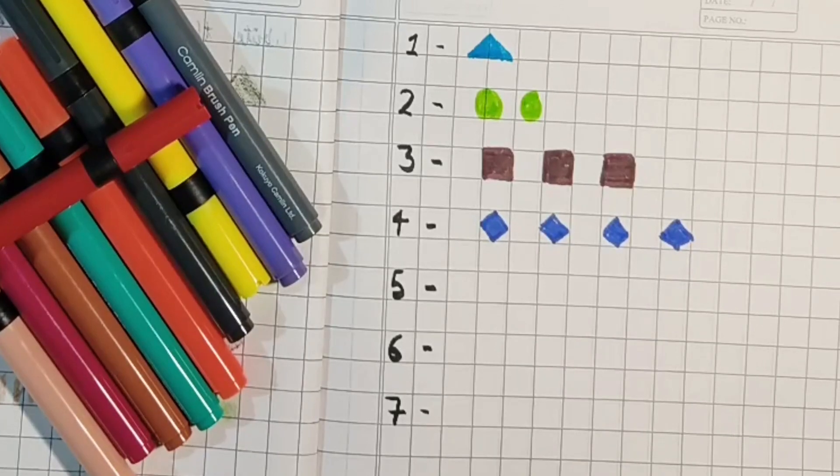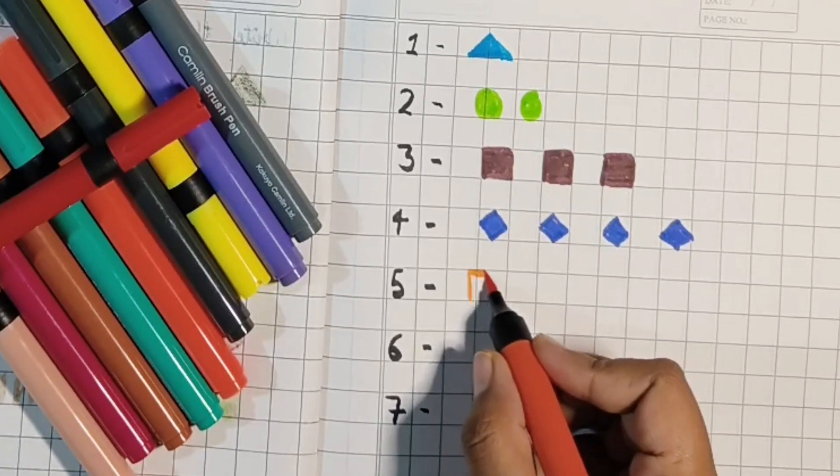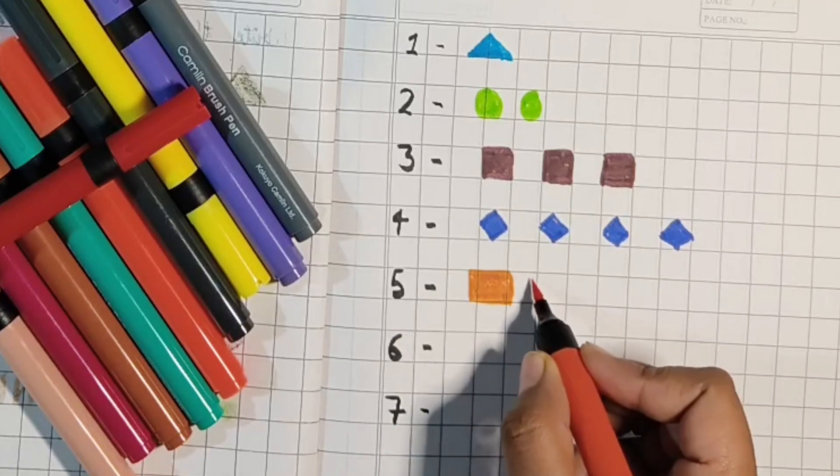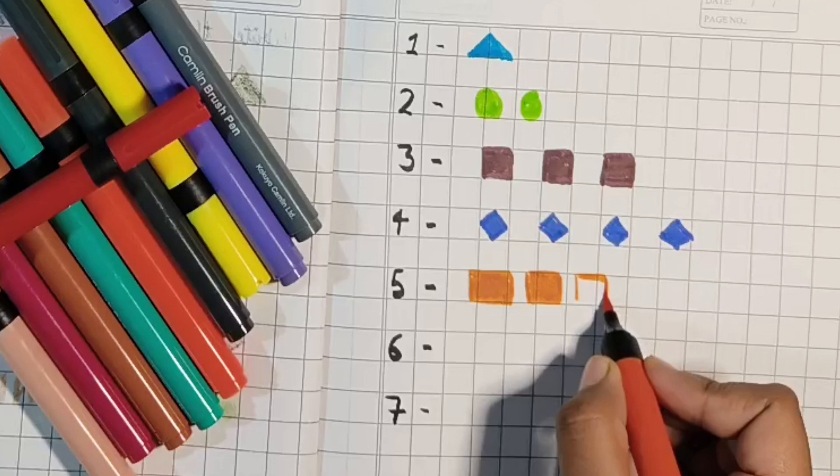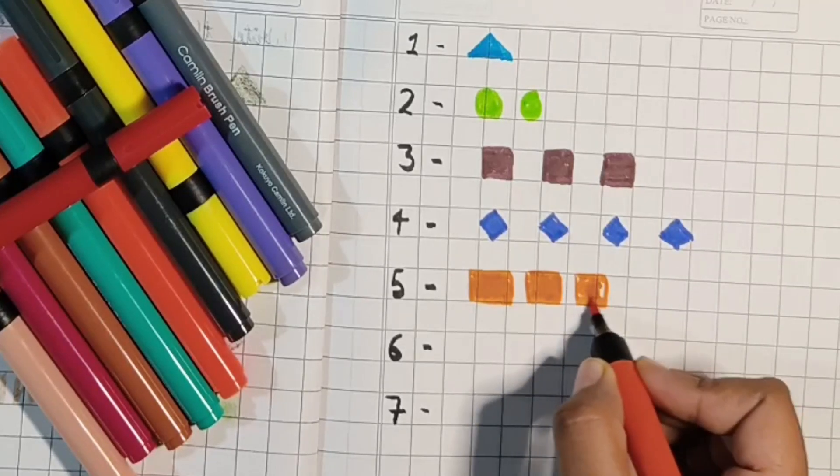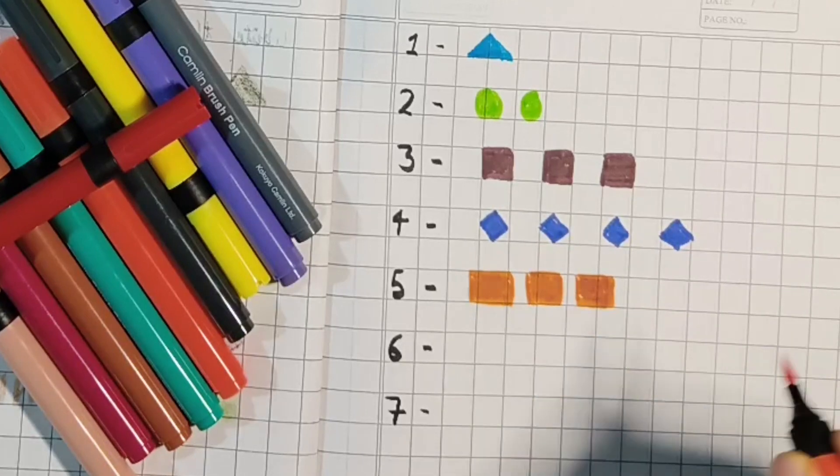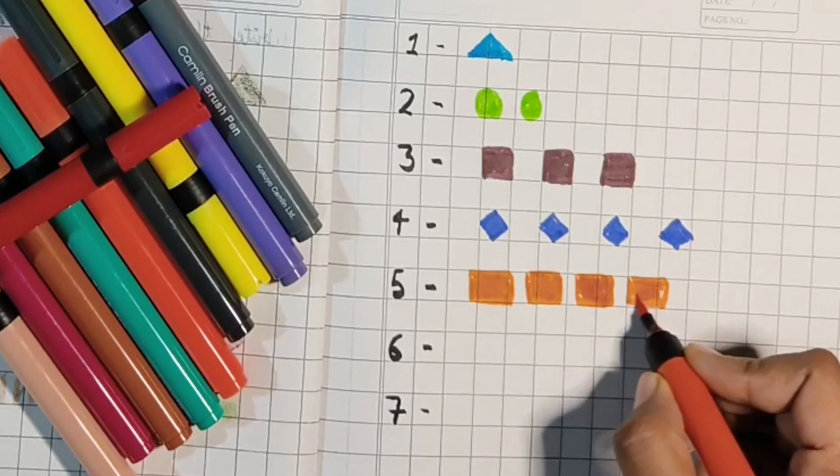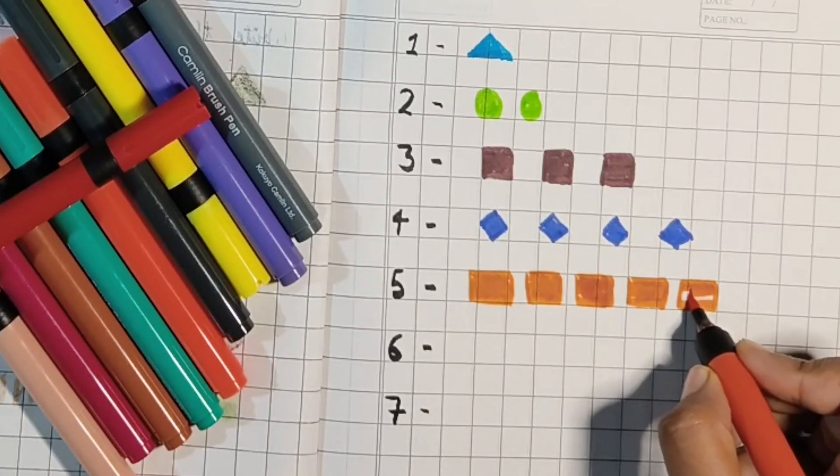Next is five. So in five, we will make five rectangles. One, two, three, four, five.